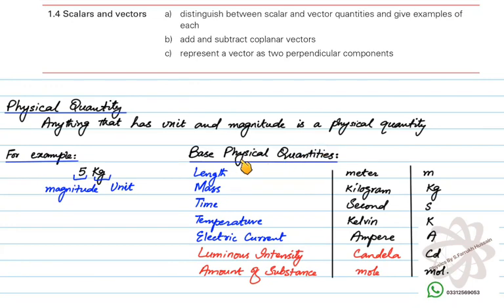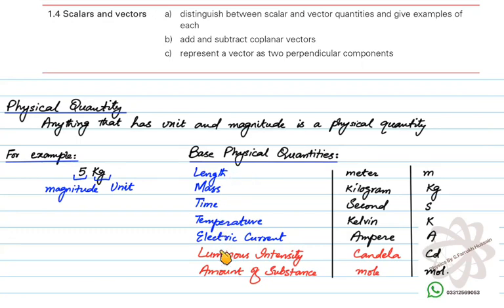Base means foundation. Every physical quantity you will learn — except these seven — will be derived from them. These base physical quantities are not dependent upon any other physical quantity, but all other physical quantities are dependent upon them. You can think of these seven base physical quantities as the pillars of physics.